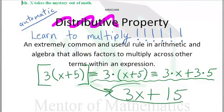And you should be done. Just that fast. You should be able to go directly to 3x plus 15. Because they're equivalent. 3 times the quantity x plus 5 is 3x plus 15.